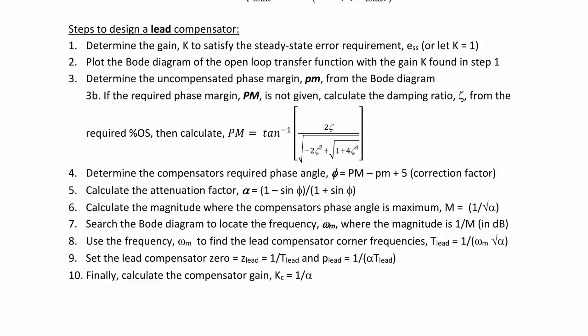Step 4, determine the compensator's required phase angle such that φ = PM - (uncompensated phase margin) + 5. 5 is just a fudge factor or a correction factor because sometimes when you adjust the control system with the compensator, there's a small change in the phase angle.